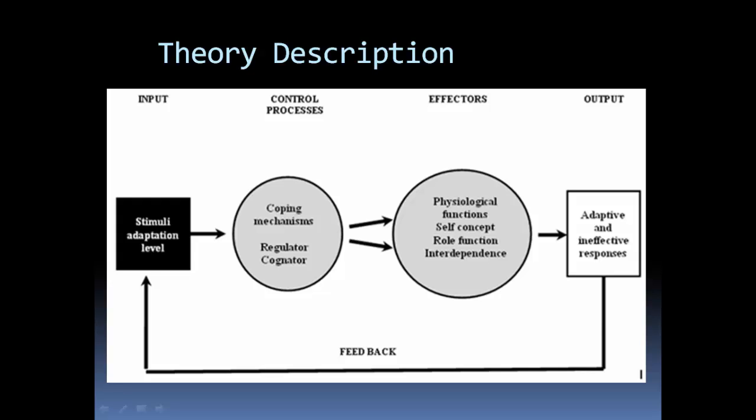This picture shows an overview of her theory with the main parts shown. You have input, which is the stimuli. You have control processes — these are coping mechanisms, broken up into two subsystems: regulator and cognator, which I'll discuss later. The effectors are physiological, self-concept, role function, and interdependence. Then you have the output — whether the responses were adaptive or ineffective.